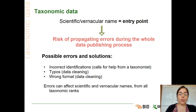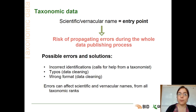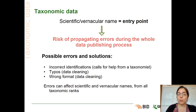We can also have some errors when data are in the wrong format. For example, when you put the scientific names in the wrong column — you can also fix that using the data cleaning process. And the errors can affect scientific and vernacular names from all taxonomic ranks. So you have to be careful about the scientific name column, but you also have to check all the taxonomic ranks to be sure that your data are correct at every taxonomic level.